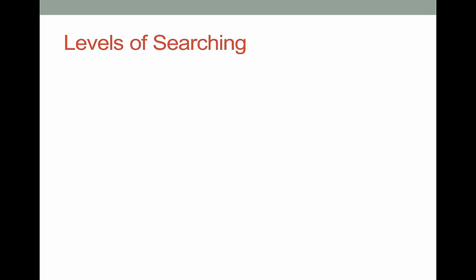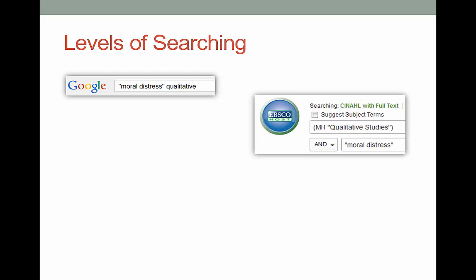There are all kinds of ways to search and so many places to find information. You can start off with the basic search in Google — we all do it, even librarians. You will find stuff, but you're not going to find everything, and there's the issue of reliability and the quality of what you find. So the next place to try is a database. For nurses, CINAHL is one of the best.